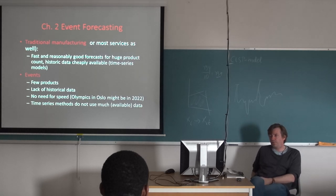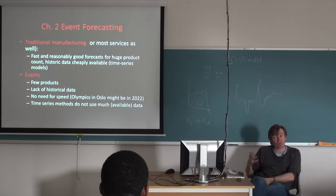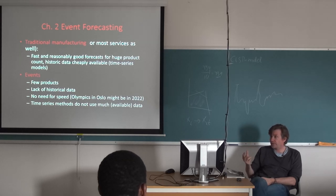It says here that in traditional manufacturing or most services as well, you need fast and reasonably good forecasts for huge product counts. And typically historic data are available. You have registered how much you sell. So you have this on your computer. So you have the information there and you have a lot, lots of it. Very often then you see time series based models because they are convenient. They produce reasonably good forecasts and they produce them fast. So you don't need to bother a lot. You can automate this process to produce these forecasts so they pop up every day. So you're able to do your planning.